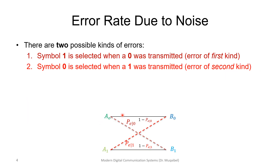Now, if we go back to the binary symmetric channel, there are two kinds of errors. Either you select 1 when 0 was transmitted — this is called error of the first kind. And the other kind of error is error of the second kind, where symbol 0 is selected when 1 was transmitted.